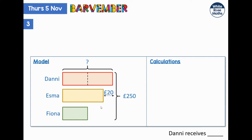We normally do this by adding or subtracting part of one of the bars. We're going to focus on this £20 and add £20 to Esma's bar, which means we've added £20 to the total. But now Esma's bar is the same as Danny's bar, so we can split that in half as well — and we now have five equal parts. I'll let you look at the calculation progress from there.